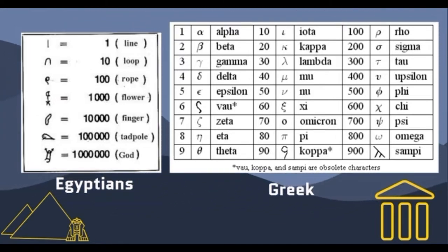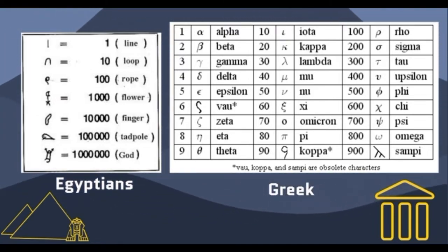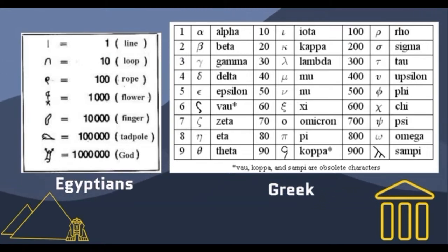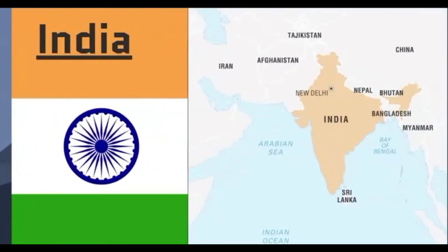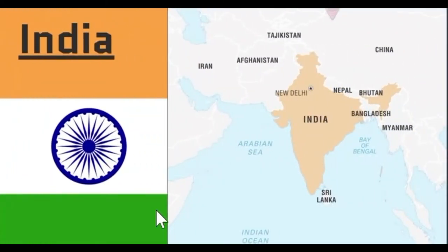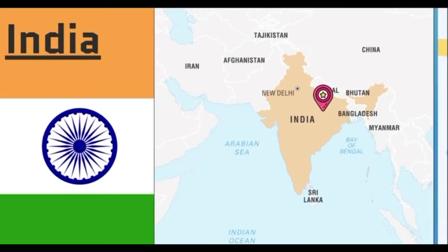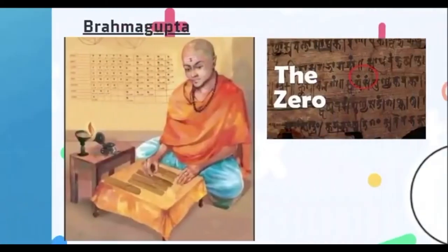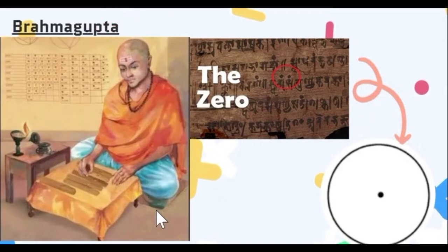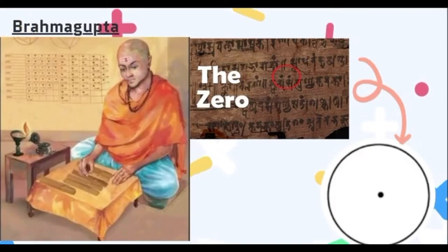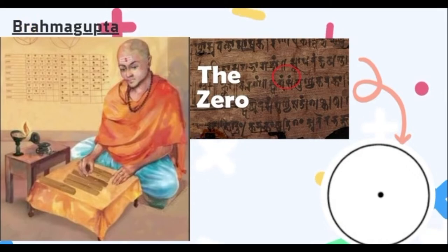While Western civilization feared zero, the East embraced it. In India, Brahmagupta, around 650 AD, used dots underneath numbers to indicate zero. These dots were referred to as 'shunya,' meaning empty, or 'kha,' meaning place. He wrote standard rules for zero, like addition, subtraction, and multiplication.